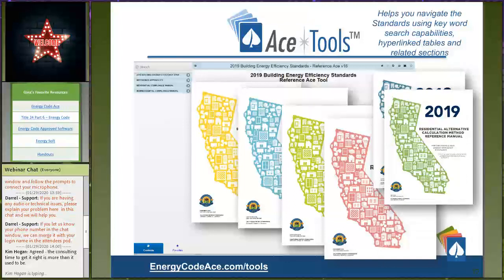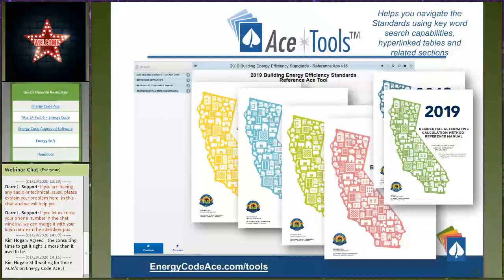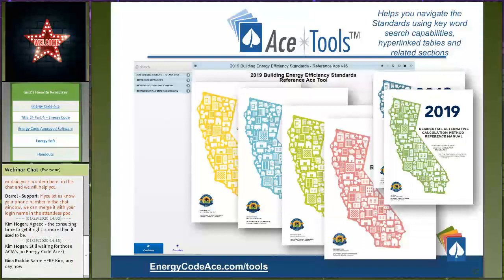The ACM (Alternative Calculation Method) manuals give us all the rules the software is required to follow when doing a Title 24 calculation. If software is going to be approved by the California Energy Commission for use with Title 24, it must follow those rules. For example, there's a rule that says your thermostat will be set at 78°F for cooling — you can't change that because the ACM manual says that's the typical thermostat setpoint used in calculations.